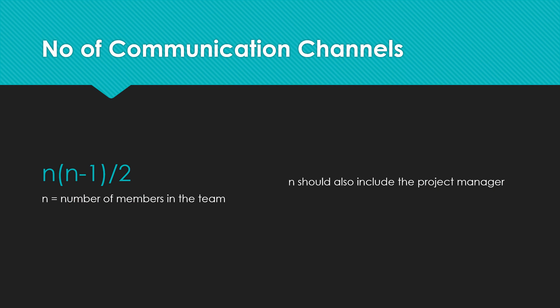The number one formula is communication channels. N into N minus 1 divided by 2, where N is the number of members in the team. This is the formula for communication channels, and N should also include the project manager. If you are the project manager of a team with four other members, the value of N is 5, not 4. Always include the project manager in the value of N.